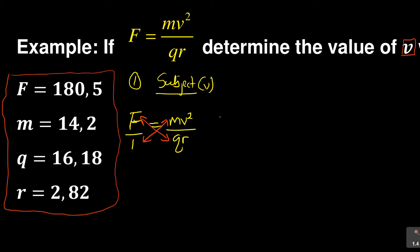So the F multiplies the qr, and the mv² multiplies the one. Remember you are looking for v as the subject, so you can start by saying one times mv², which does not change anything, so you still maintain your mv² is equal to F times qr.